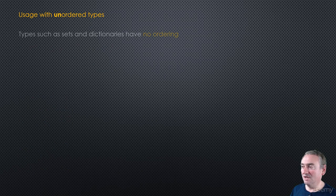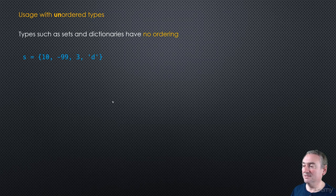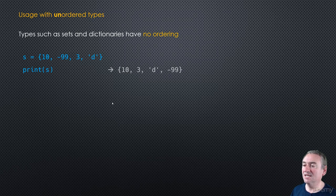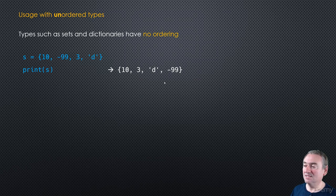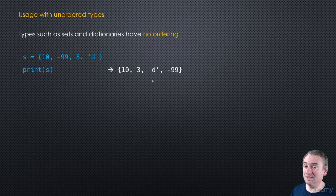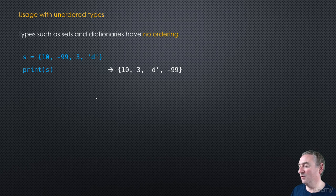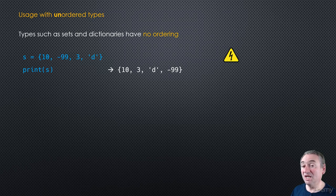Now let's look at usage with unordered types like sets and dictionaries, which have no guaranteed ordering. If you create a set and print it, you may get a different ordering than you expect — the order is not preserved. Depending on your Python version or implementation, you could get something very different. There is no guaranteed order of any kind in sets.